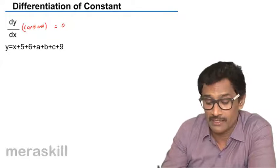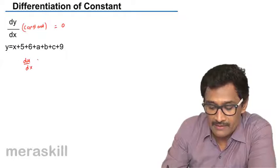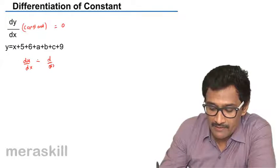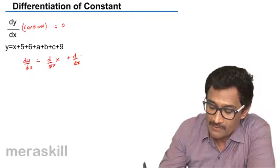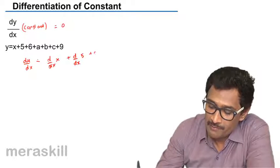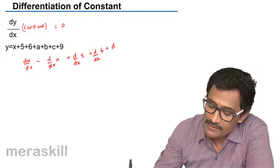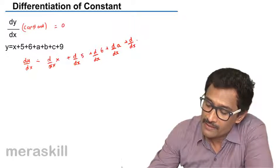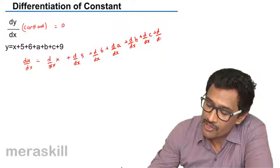Let us take this particular example. So dy/dx is nothing but dy/dx of x plus dy/dx of 5 plus dy/dx of 6 plus dy/dx of a plus dy/dx of b plus dy/dx of c plus dy/dx of 9.